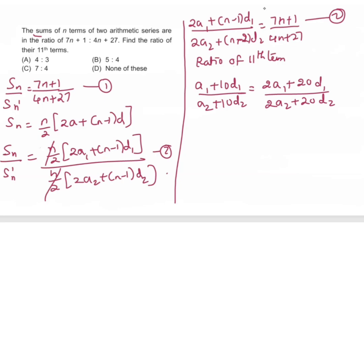We will write it in the form of the formula. We can write this as 2a1 plus 21 minus 1 times d1 divided by 2a2 plus 21 minus 1 times d2. That is nothing but equal to your n value.